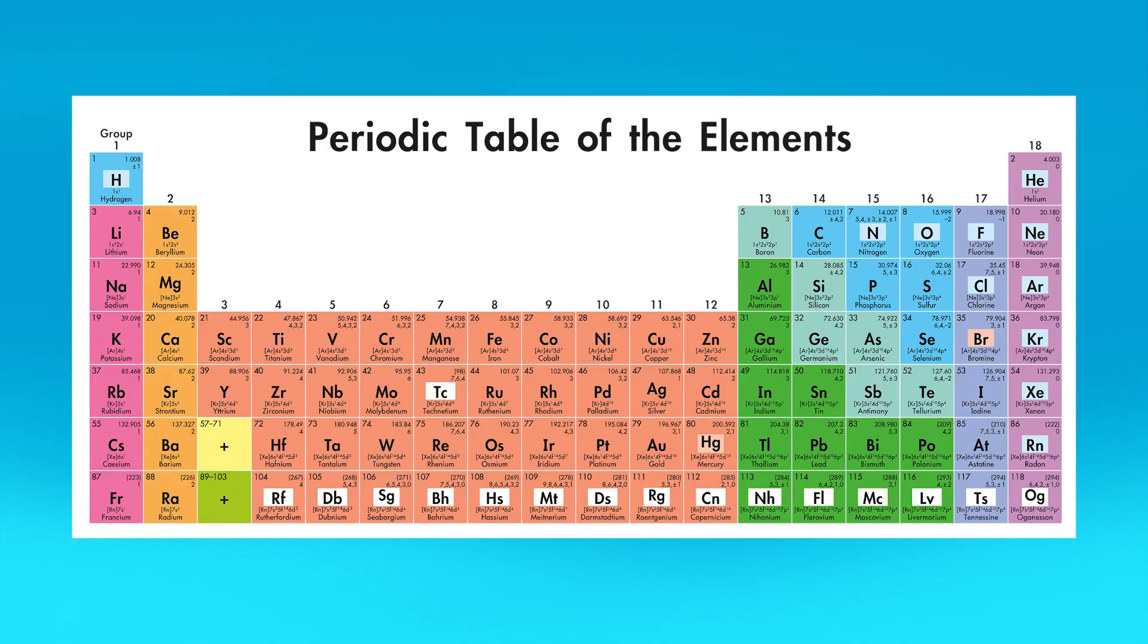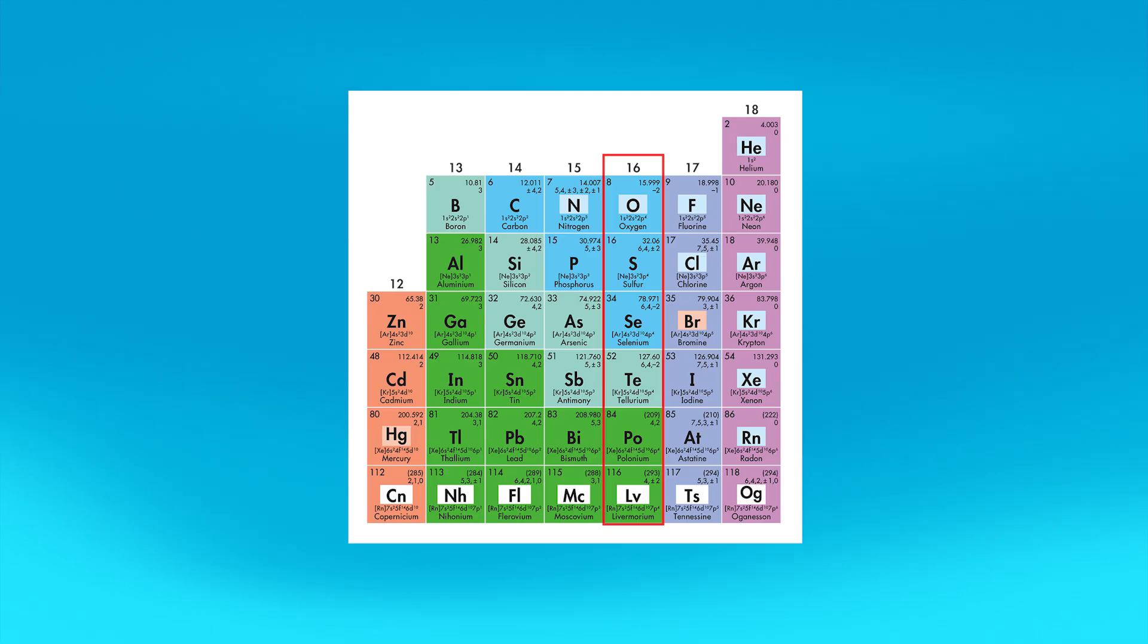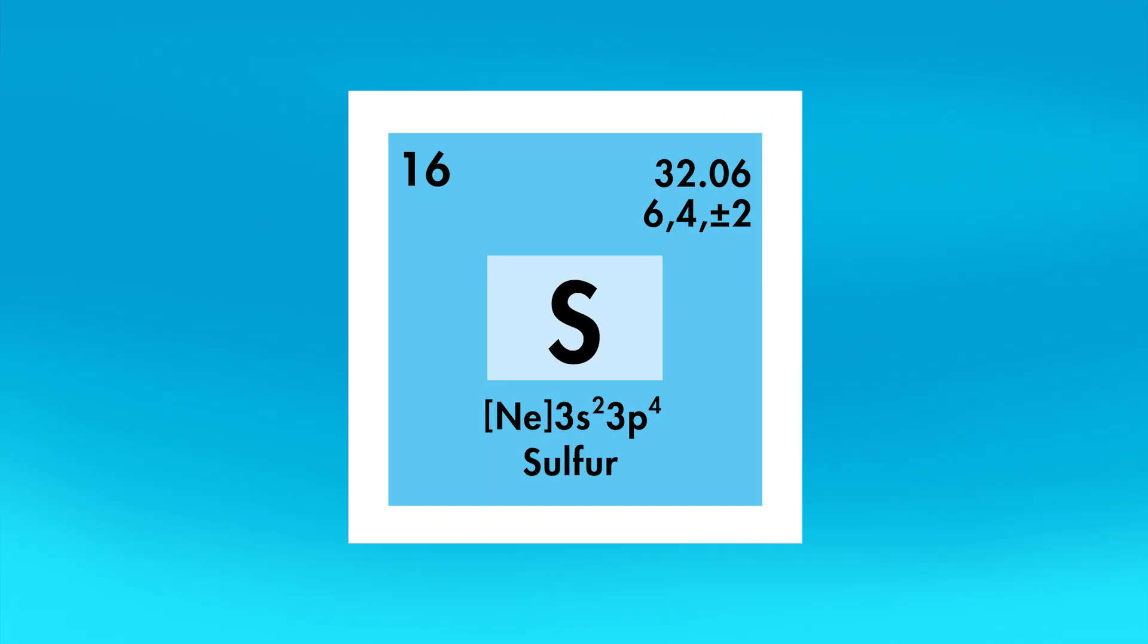On the periodic table, sulfur is placed on the right side in group 16. Sulfur is in group 16 because an atom of sulfur, like other members of that group, has 6 valence electrons. The atomic number of sulfur is 16, which means that an atom of sulfur has 16 protons and 16 electrons.